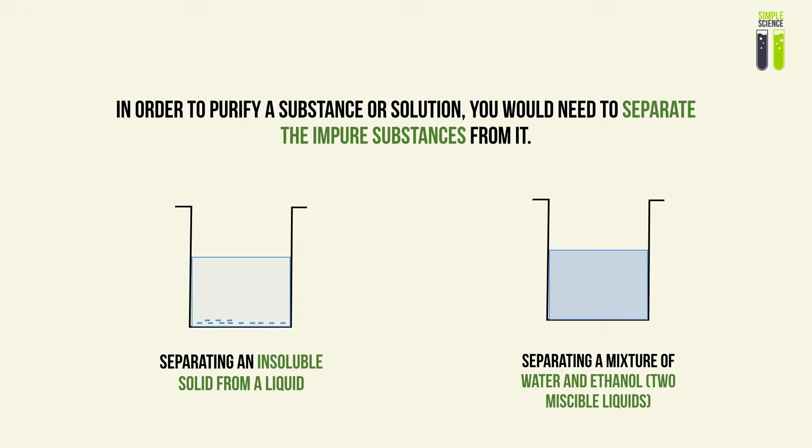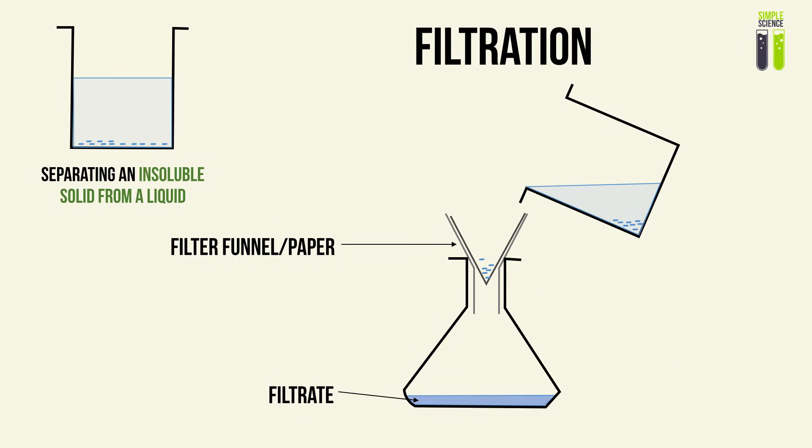Another example is separating a mixture of two miscible liquids — liquids that mix and can dissolve within each other, for example water and ethanol. For the first example, separating a solid from a liquid, that method is filtration. We use a filter funnel and filter paper, and we pass our liquid and insoluble solid into the system to obtain a filtrate.